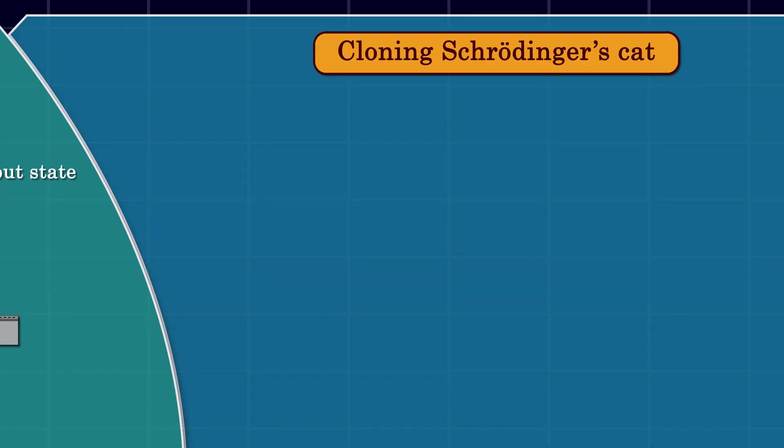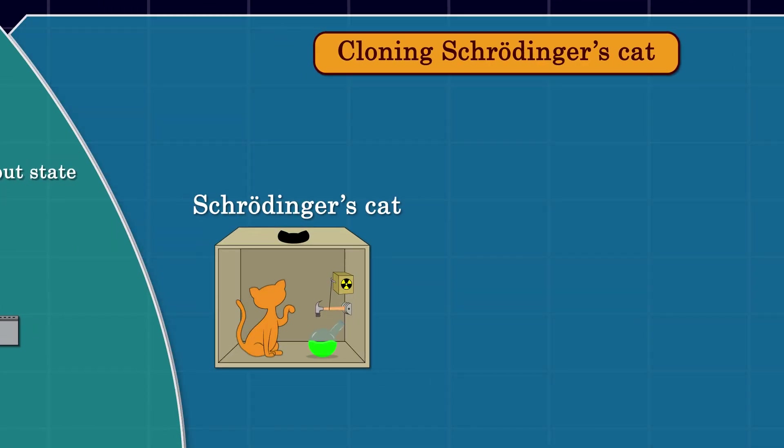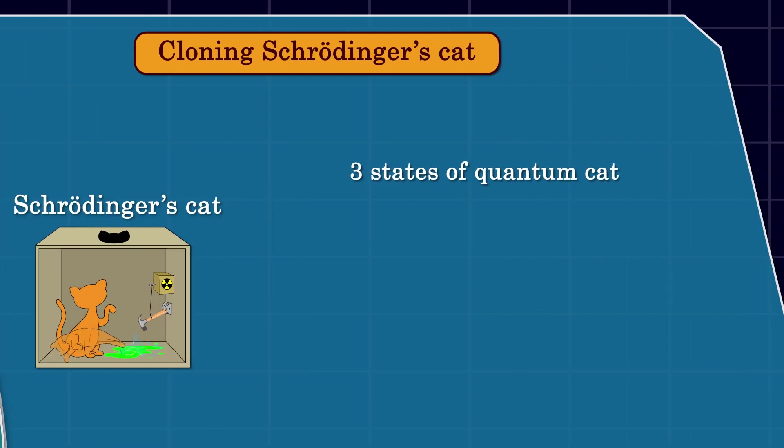Like in every genuine quantum experiment, we'll start with Schrodinger's cat. Schrodinger's cat can be in three possible states. First, we can put a live cat in the box. Next, we could put a dead cat.